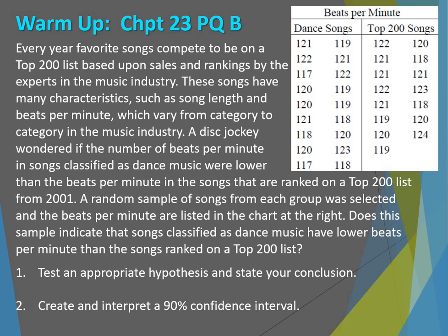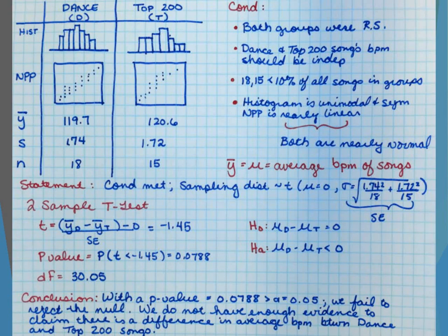First thing: it says test an appropriate hypothesis and state your conclusion. The way I do my work — I show both graphs so you can see them, but I prefer if you only pick one. Histograms aren't always the most trustworthy simply because it's all about how you select your bin width. If you do zoom-stat versus changing it up a little bit, you never know if it's going to look completely different. I like the NPP. Box and whiskers are also pretty good because you can tell pretty quickly if you have outliers or not, and you can see whether or not there's a skew going on.